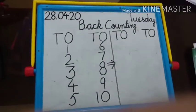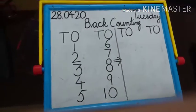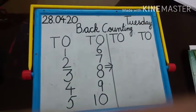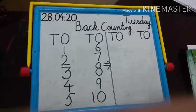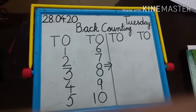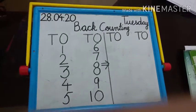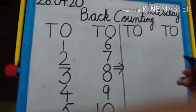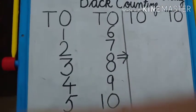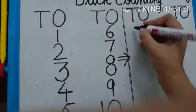Bilkul upar se. Jab aap seeriyon se niche utar rahe hote ho - yeh dekho, agar aap 15 steps chadh rahe ho upar, to phir aap sabse pehle jab niche aoge to aap 15 wala step pe honge na, sabse upar wala step pe honge na? To humein aise sabse bade wale number se start karna hota hai. To hum kya karenge back counting ke liye? Sabse pehle kya likhenge? 10, agar humein 10 se likhna hai to 10.